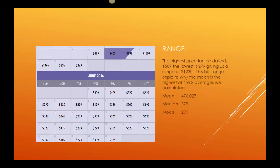The range, the highest price for the dates is $1,509, and the lowest was $279, which says that range, that difference, was $1,230. Really, a big range explains why the mean is the highest of the three averages we calculated. Having a big range says they're really dispersed, and so there is going to be a great difference in the mean, where the median will be the middle. Half the points will be higher, half the points will be lower, and mode, well, you never know what's going to happen with the mode.